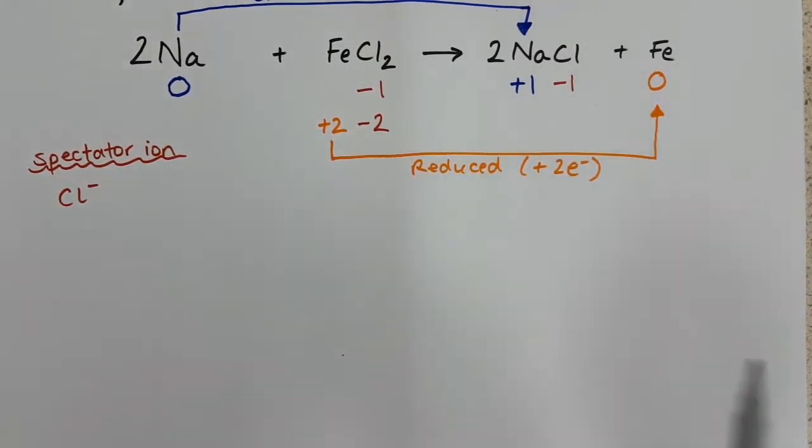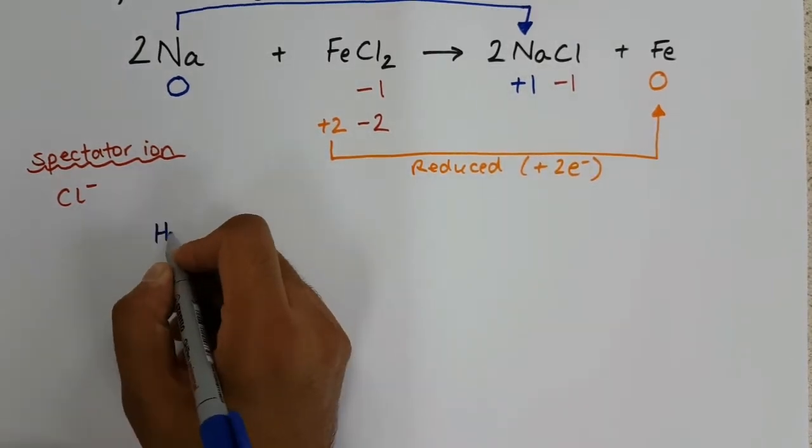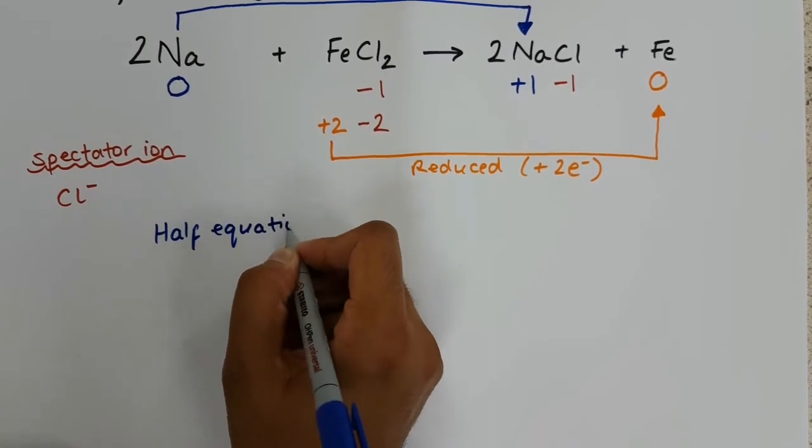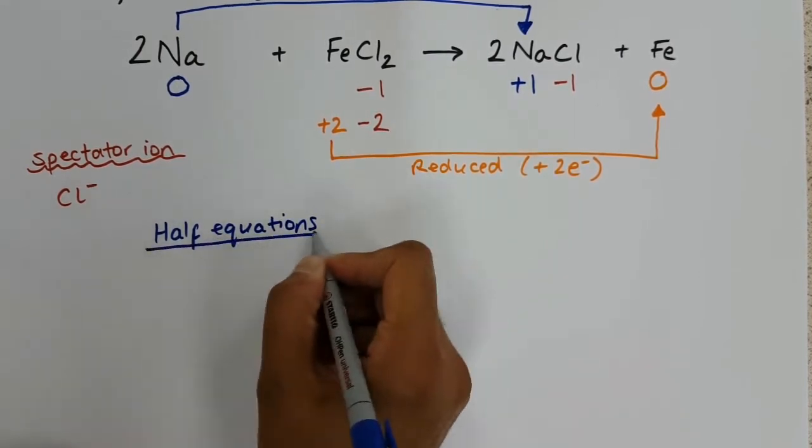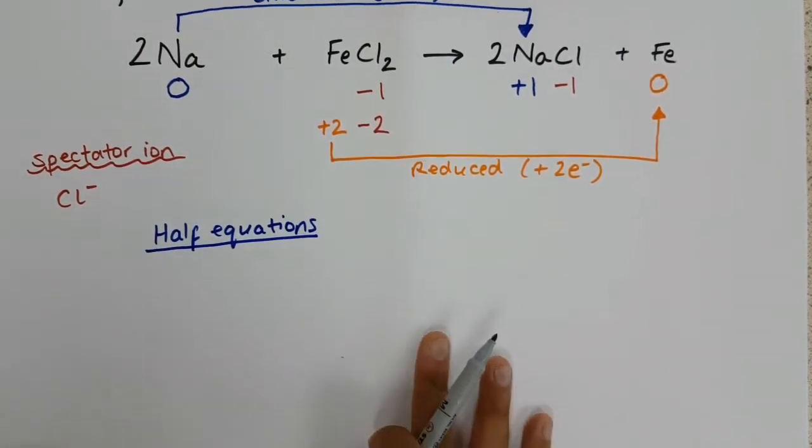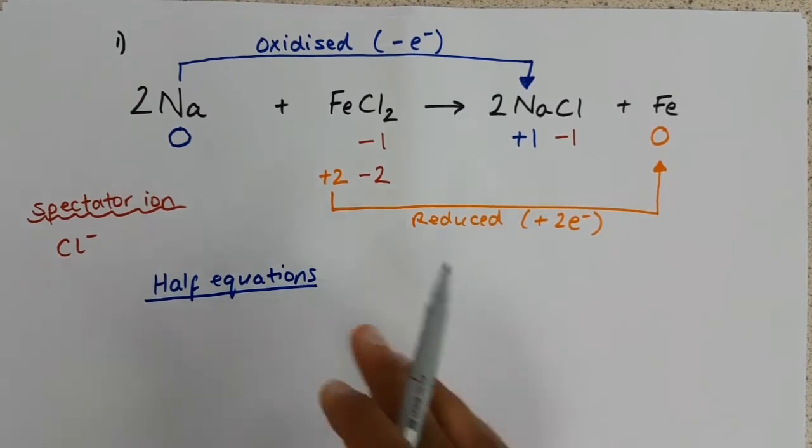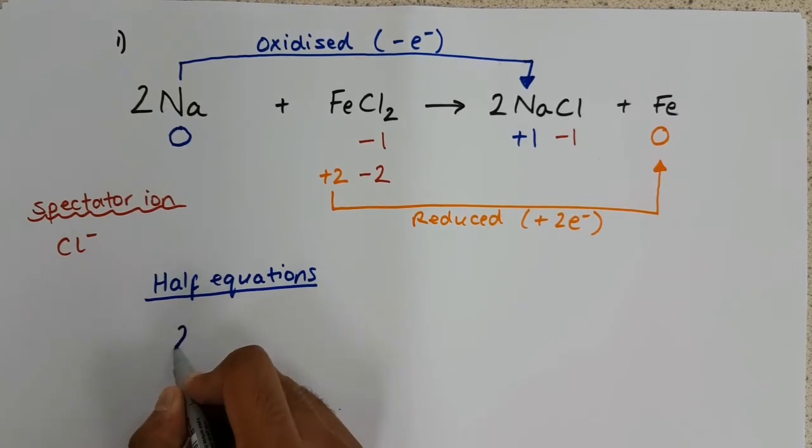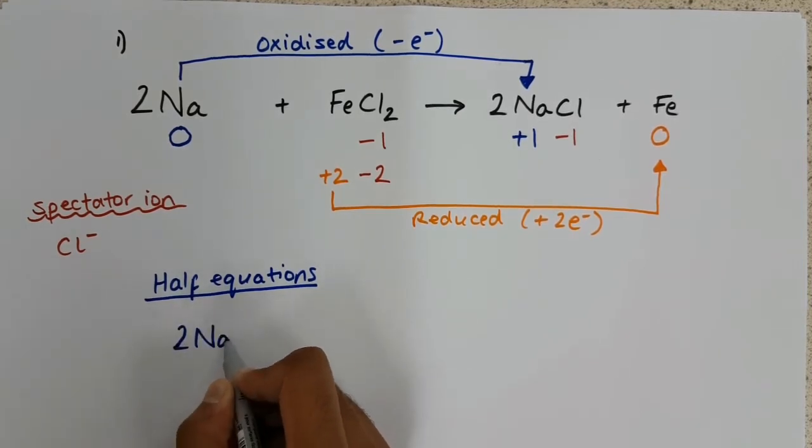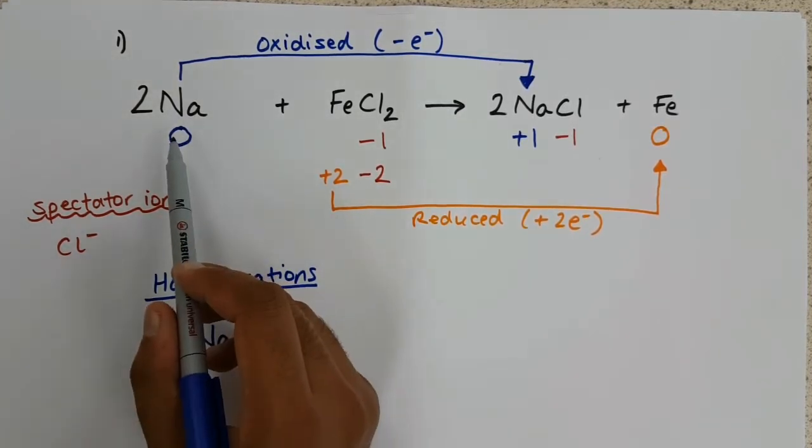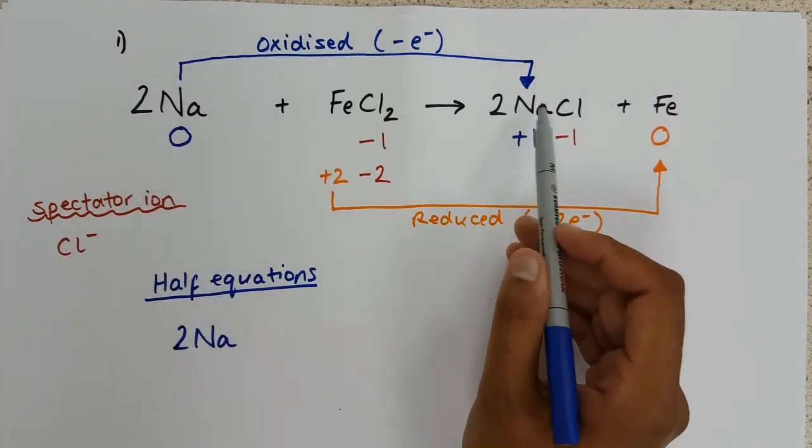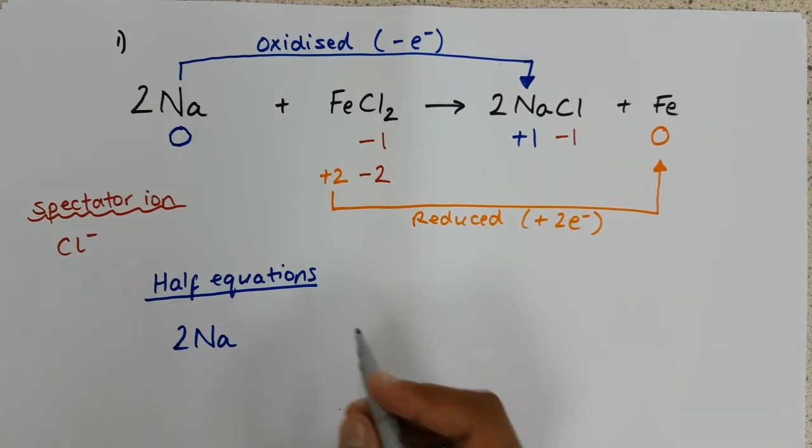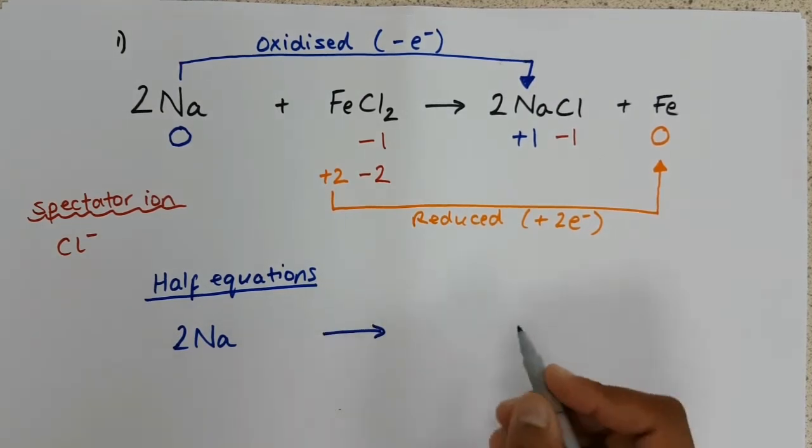For the time being, let's construct our half equations. We are going to have two half equations to show the reduction reaction and the oxidation reaction. And you can probably see at the top here, sodium, there are two of them. So our first equation will start with 2Na. 2Na looks unassuming here, but it actually forms two Na positive 1s. So let's draw our arrow across. 2Na.